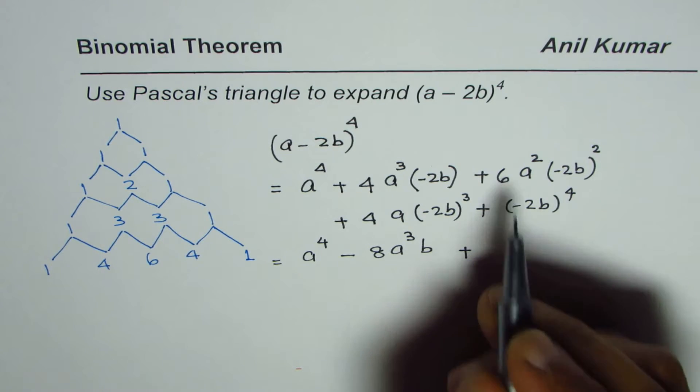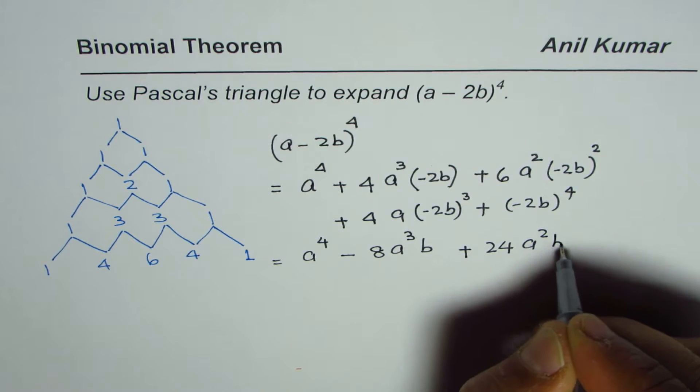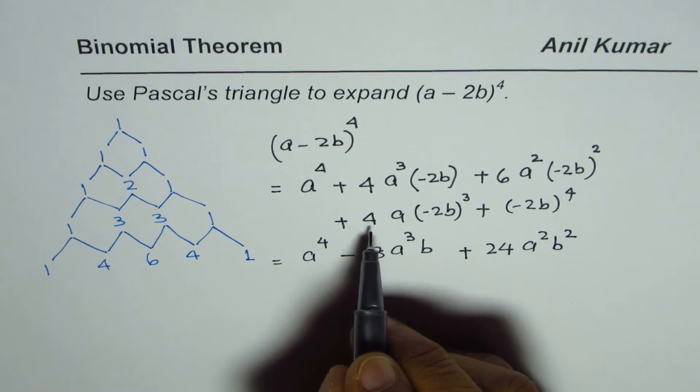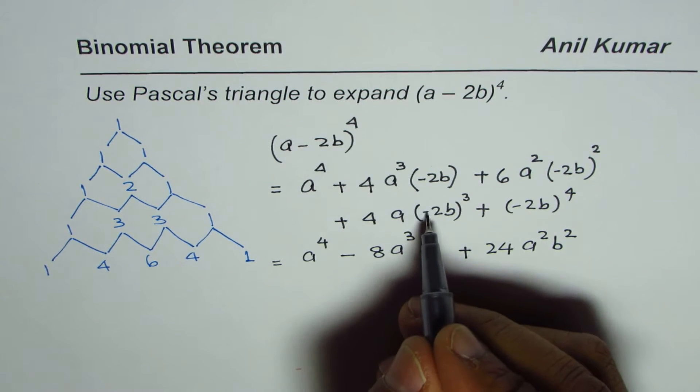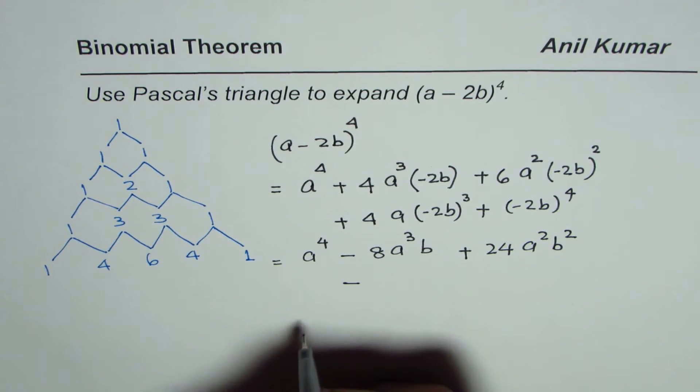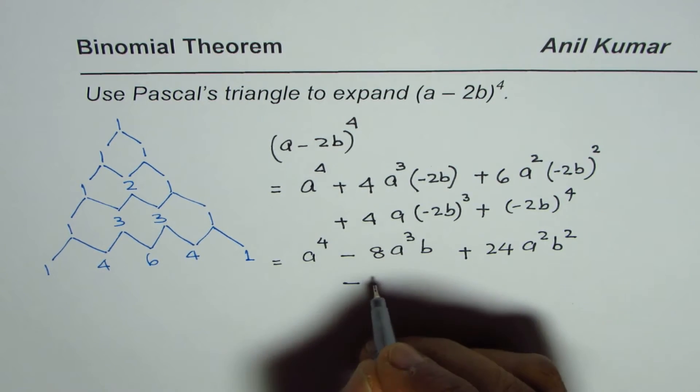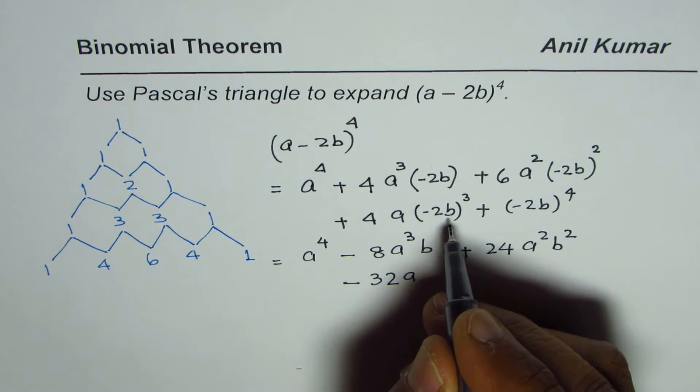4, so 4 times 6 is 24, giving 24a^2b^2. Now here, (−2b)^3: 2^3 is 8, and minus remains minus for odd power, so this becomes negative. 8 times 4 is 32, giving −32ab